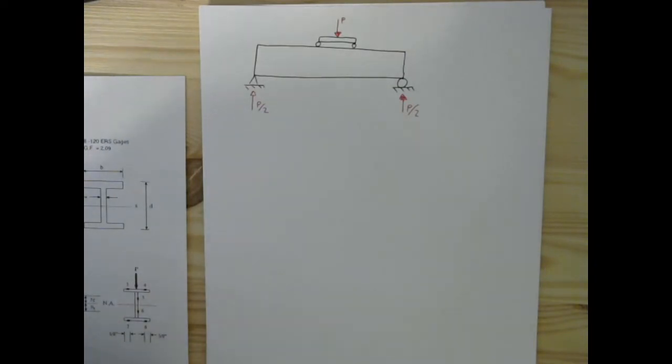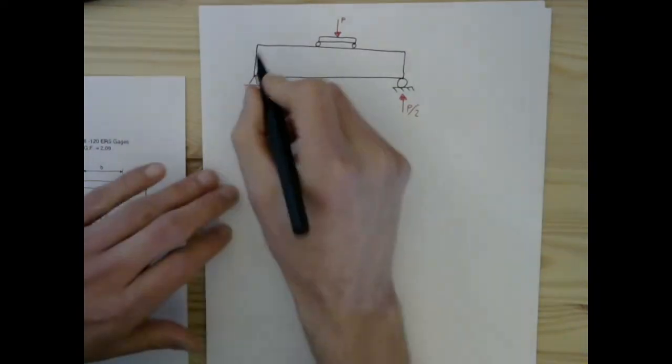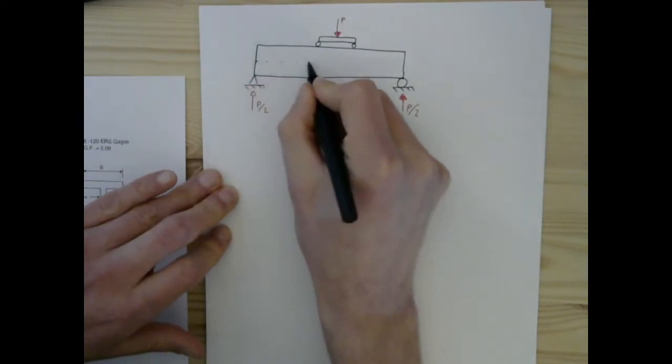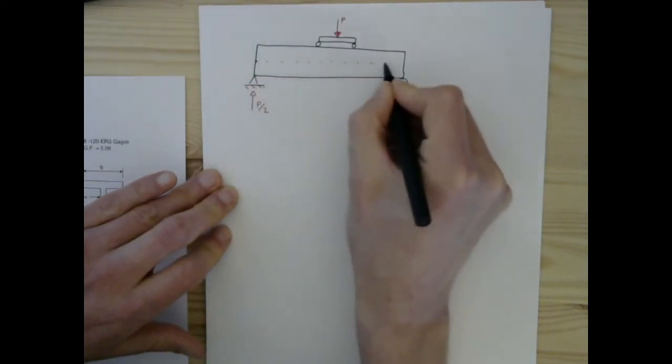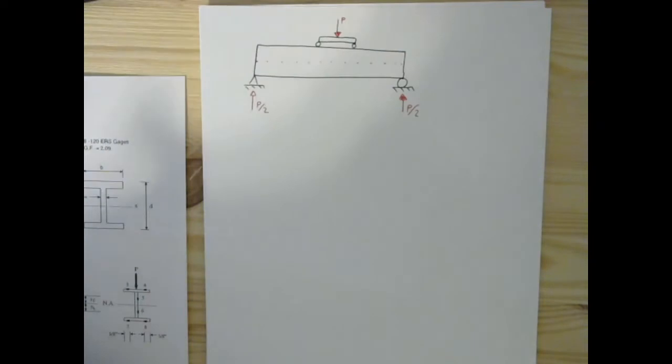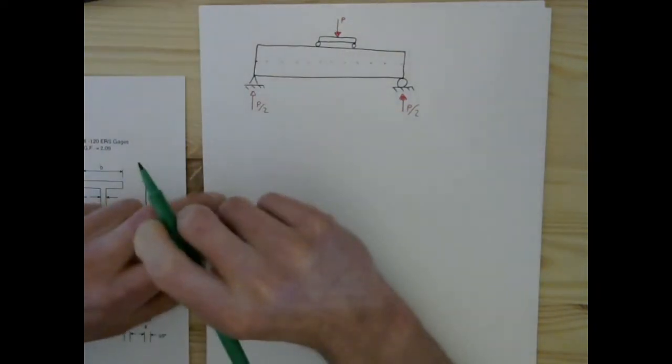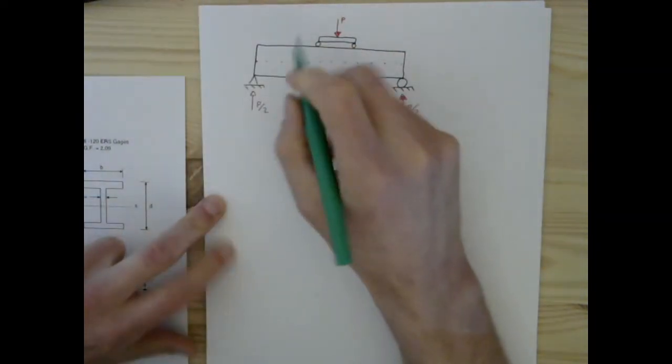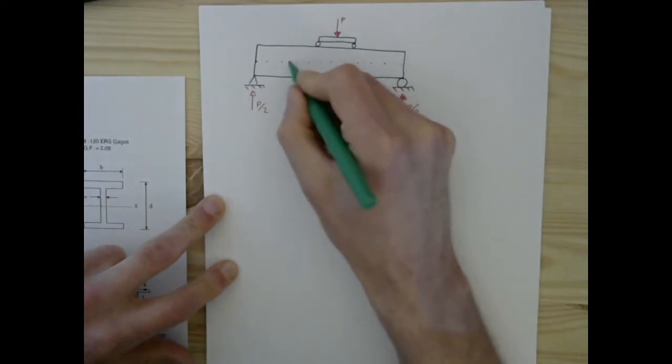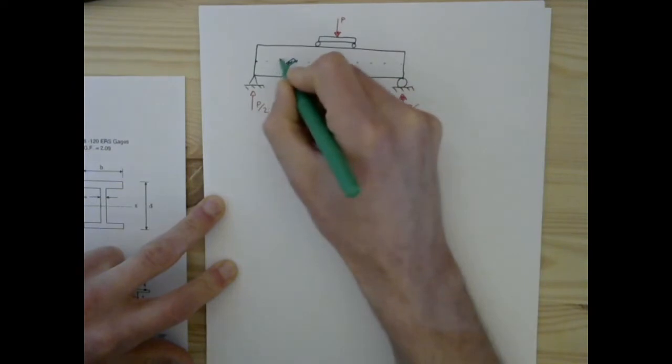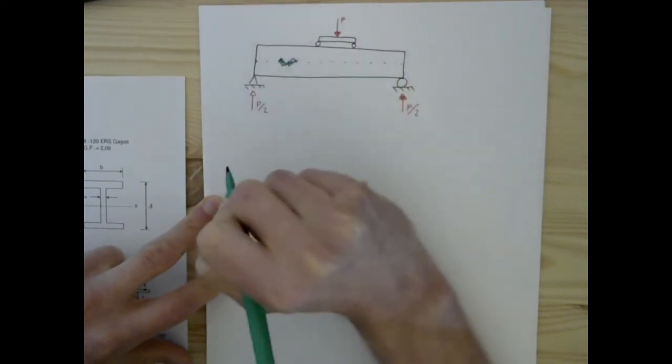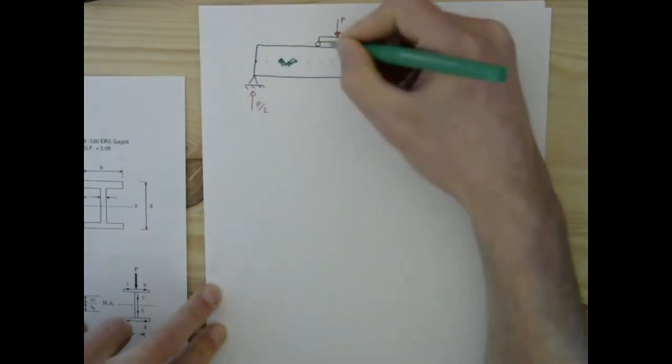For this, we're going to be looking for, let's draw the neutral axis right there. Here, we're going to be looking at strain gauges located right here for 0.1, right here for strain gauge 2, and then we will have a strain gauge right there in the middle.